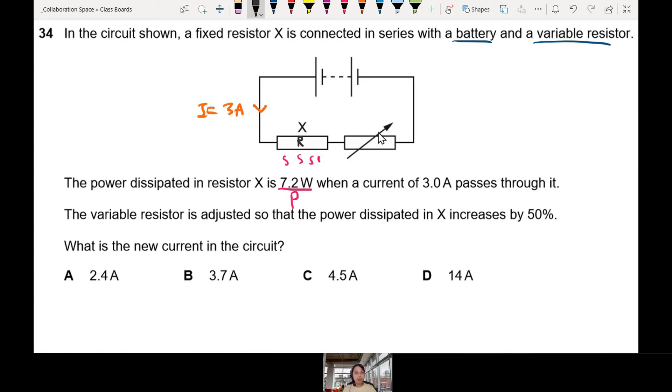Now you adjust the resistance of this one - you see this arrow, right? The resistance can change. You change it until the power increased by 50%. That means my original 7.2 watts now has to be 150%, so times 1.5. The new power is going to be 10.8 watts. What is the new current?